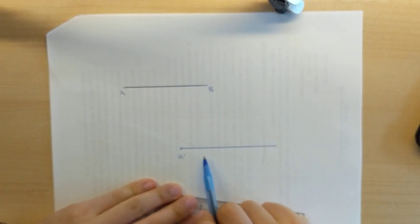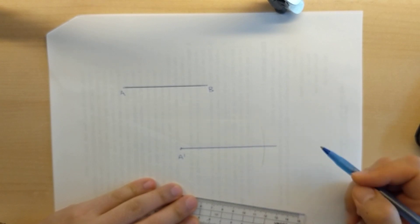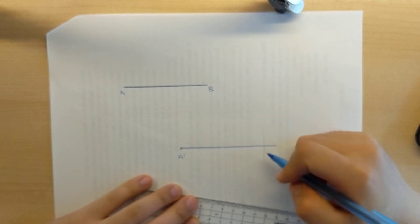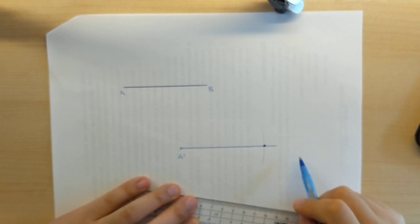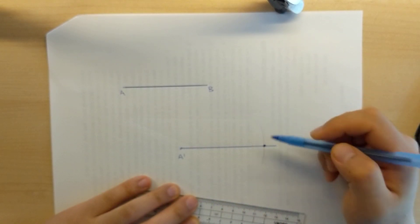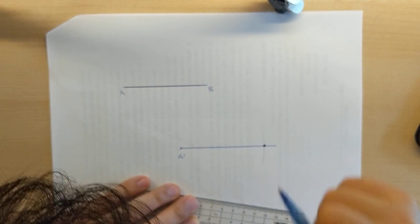And I purposely drew it longer than the arc there because I am trying to tell you that the intersection of the line that I draw and the arc that I made, this is going to give me B prime.